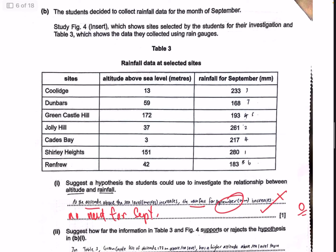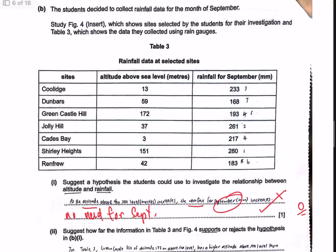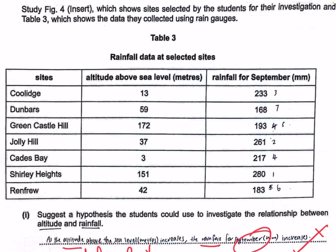Suggest how far the information in Table 3 and Table 4 supports or rejects the hypothesis you came up with. This particular set of data is unique because it actually has no clear relationship. To ascertain that, go through the data in terms of elevation from smallest to highest, and look at the corresponding changes in rainfall. At Cades Bay — only 3 metres above elevation — rainfall is 217 mm. As elevation increases to 13 metres, there is a slight increase in rainfall. Moving to 37 metres, it is still increasing, so there seems to be a general increase trend.